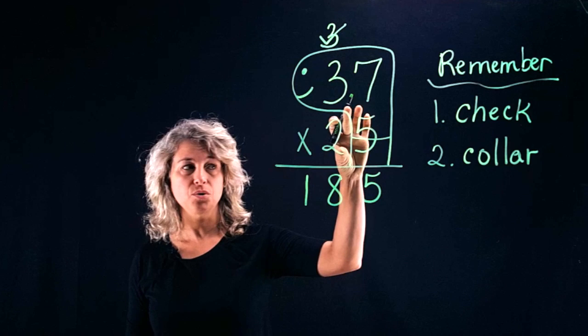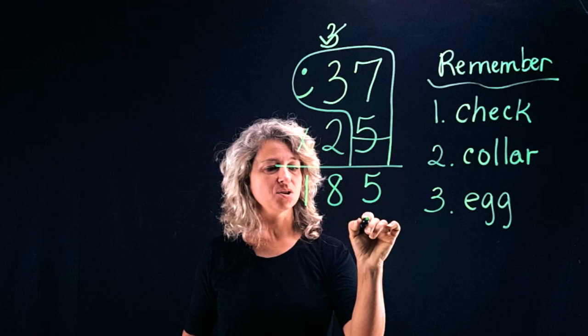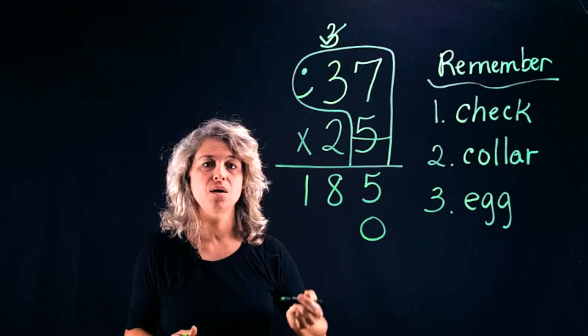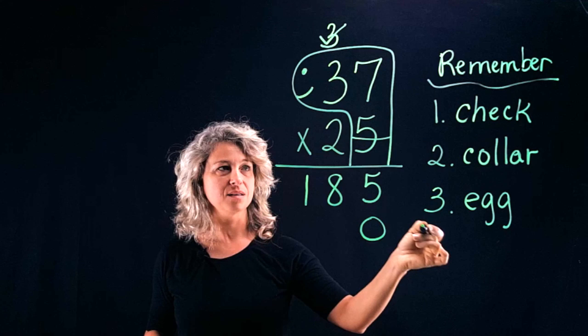Number two: we're going to give a collar to the turtle and this is going to remind us that we will no longer use the five. We're finished with the five. And number three, which is my favorite, is lay an egg. Give a turtle egg, which is a zero underneath the five. And this is allowing us to remember that we are finished with the ones place. This is the most common error with fourth graders is forgetting to put the placeholder.